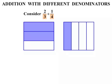Now, because the denominators are different — the three and the four — we need to think: what number would both three and four divide into? Well, that number would be twelve. Both three and four divide into twelve. So we are going to break up each of the shapes into twelve pieces.